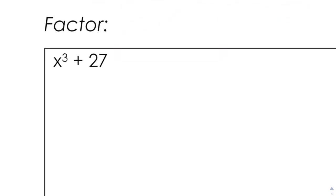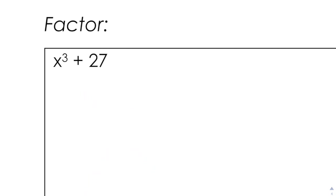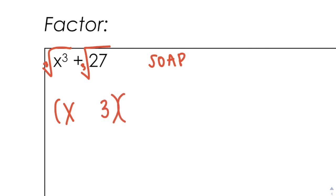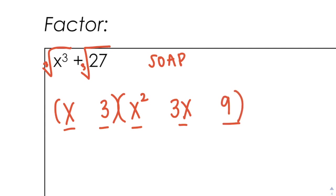So if I take a look at X cubed plus 27, I have two terms, I can't set up my X, there's no middle term, it's cubed. X cubed is a perfect cube and 27 is a perfect cube. Cubic root of X cubed is X, cubic root of 27 is 3. Square X to get X squared for the first term of the quadratic, square 3 to get 9 for the last term. X times 3 is 3X for the middle term. Then follow the rules of SOAP: same sign plus, opposite sign minus, always positive. You always end up with a linear and a quadratic because 1 plus 2 is 3.